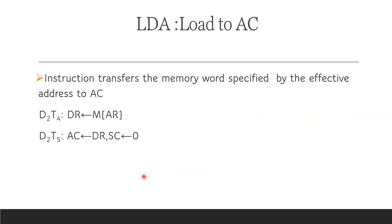For LDA — Load Accumulator (D2): the instruction transfers the memory word specified by the effective address to AC. At T4: M[AR] → DR. At D2 T5: AC ← DR. The sequence counter is then cleared to 0.